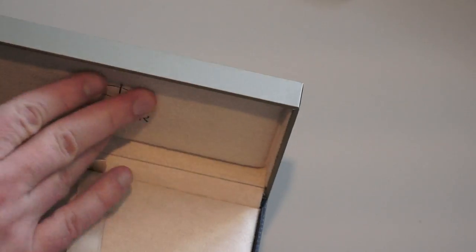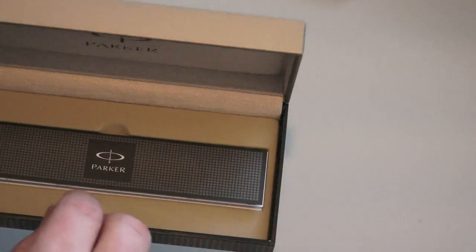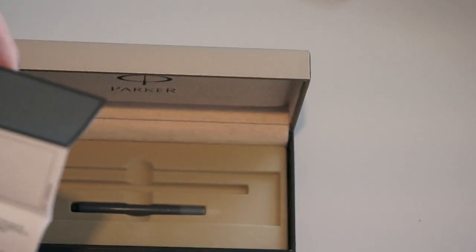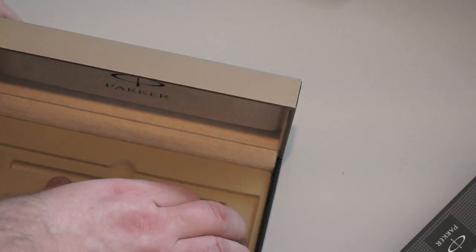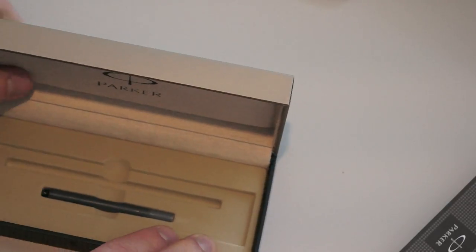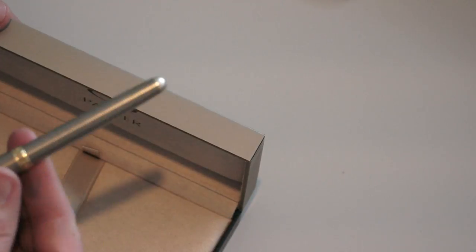Inside the box it comes cushioned with a very nice leathery material. Under the fountain pen bed can be found the Parker manual for inking and maintenance of the pen, the warranty, and also a Parker cartridge with ink, the long version, which is probably blue ink. The box is quite nice, a little bit oversized for the size of this pen. So I'm gonna put it away and continue with reviewing the pen.